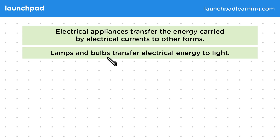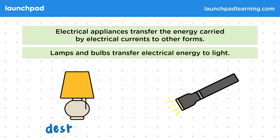Lamps and bulbs transfer electrical energy to light. A desk lamp transfers electrical energy from the mains into light, and a torch transfers electrical energy from a battery into light. Other examples of appliances that transfer electrical energy into light include digital displays on screens, traffic lights, and also car indicators.